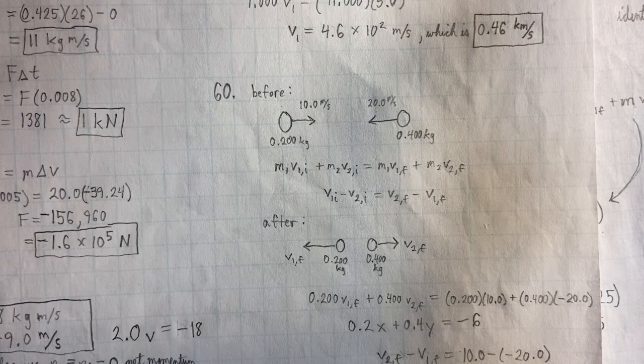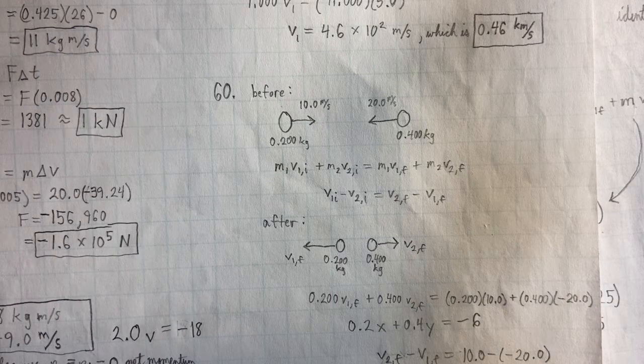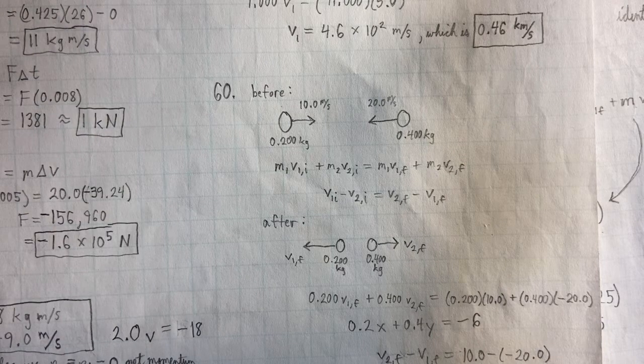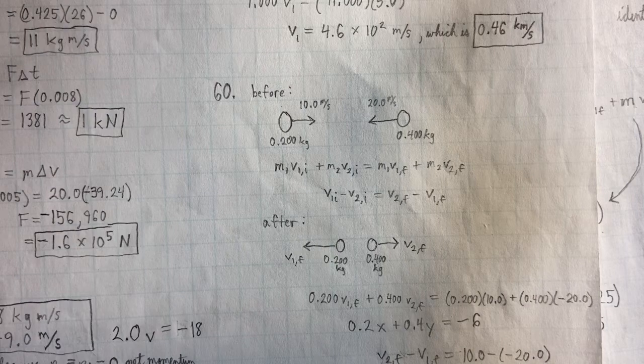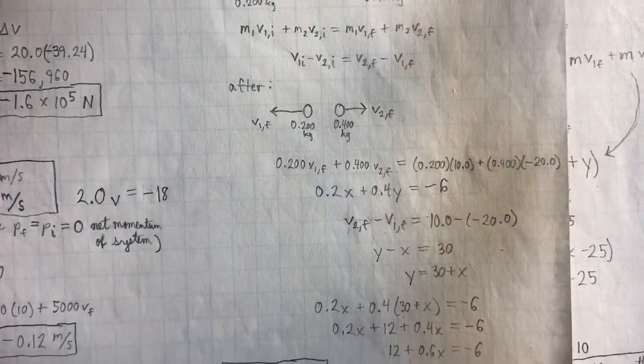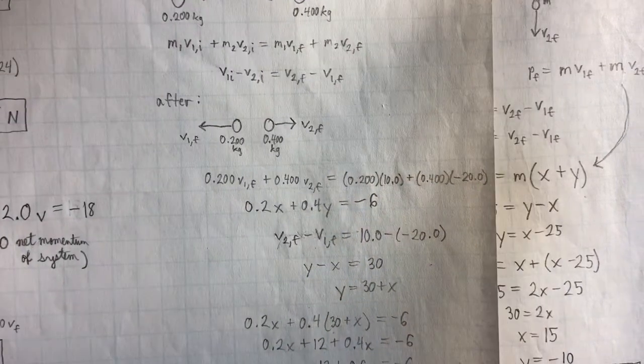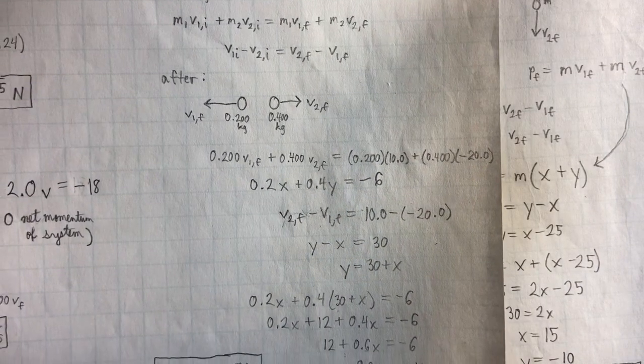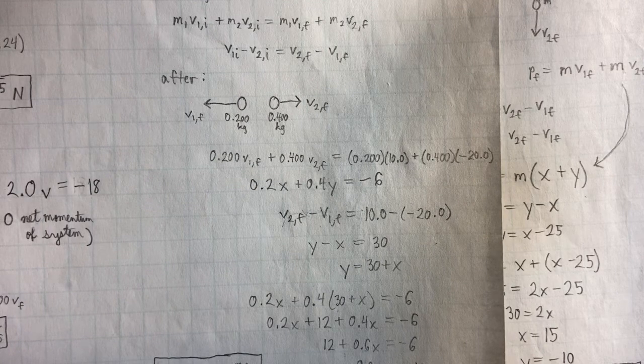Now the after sketch, we have the balls reversing directions. Masses haven't changed, of course. And they have the velocities of V1F and V2F. Okay, so at this point then we really just plug and chug. We plug in the things that we know. And now we're going to solve for the things we don't know.